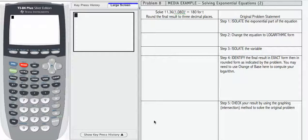We're given the equation 11.36 times 1.080 to the t equals 180, and we want to solve that for t. So the exponential part is here, 1.080 to the t.